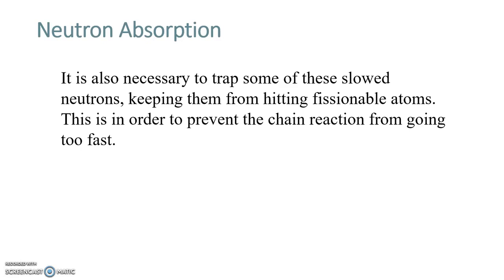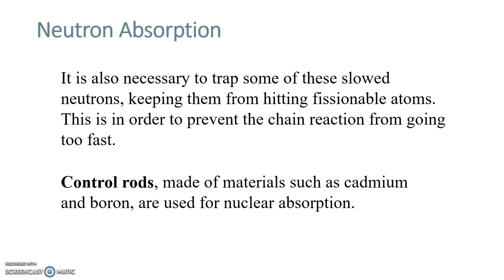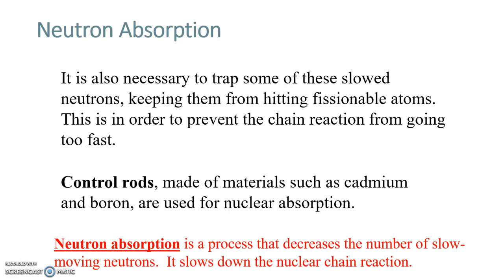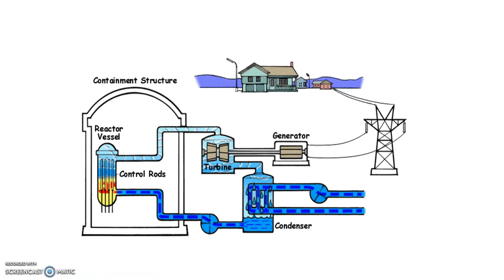You also want to be able to trap neutrons if you need to, which completely keeps them from hitting anything. That's done by the use of control rods made of various materials. The main thing is that they need to be able to be hit with a lot of neutrons and not react or degrade. That's called neutron absorption, which is different than moderation. You bring down the total number of neutrons and that slows down the nuclear chain reaction.